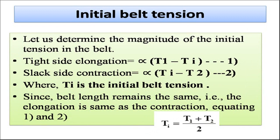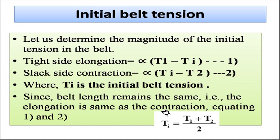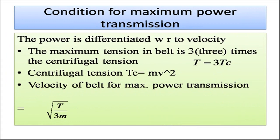Let us determine the magnitude of the initial tension in the belt. Tight side elongation is proportional to (T1 minus Ti) and the slack side contraction is proportional to (Ti minus T2), where Ti is the initial tension. Since the belt length remains the same over the pulley arrangement, the elongation equals the contraction. Equating these, we get the initial tension Ti = (T1 + T2) / 2.